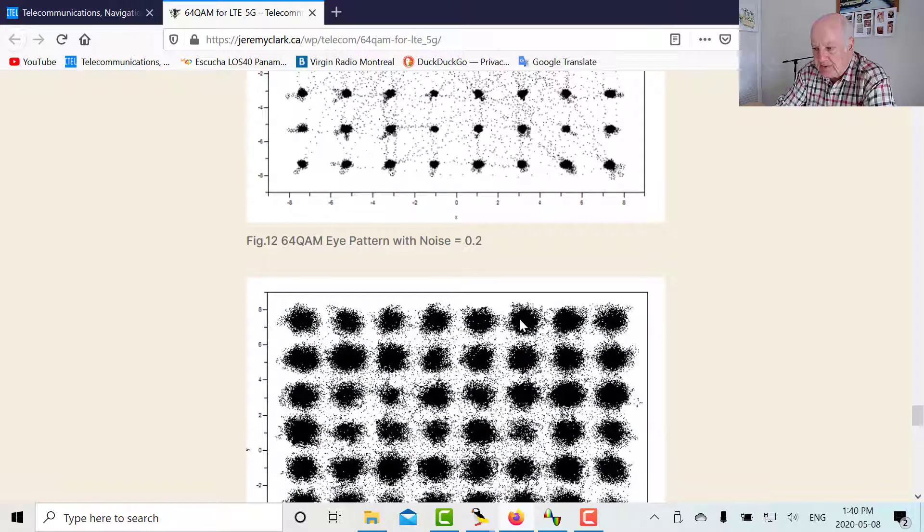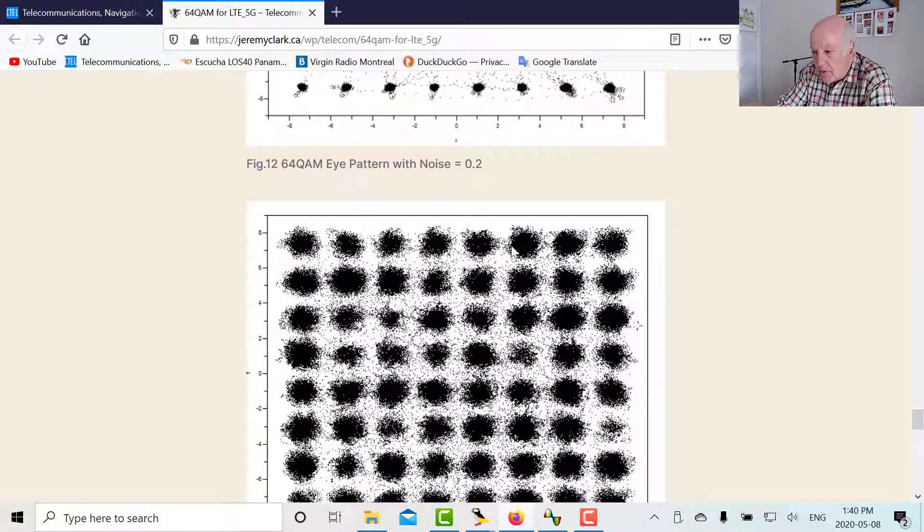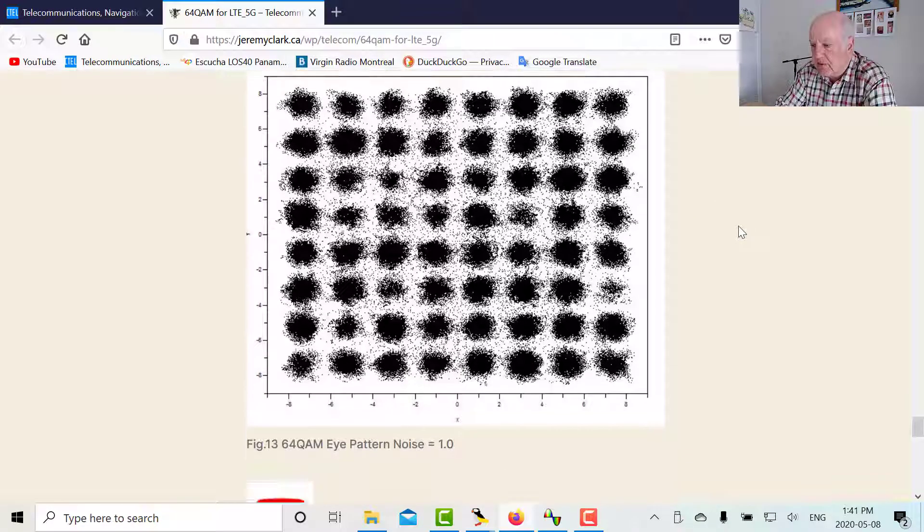Now, the problem is with QAM is that as you add more noise, notice now that there's a blur between these two particular states. So the more noise you add, there's a high probability that instead of this particular constellation point being chosen and those six bits, that the receiver may make an error and get this particular site here with those six bits or this one or that one. Well, this one's further away. So the chances are it's the closest neighbors that you'll make a mistake with. So this blur merges with that, you might get that one instead or this one or that one. So that's what happens with QAM.